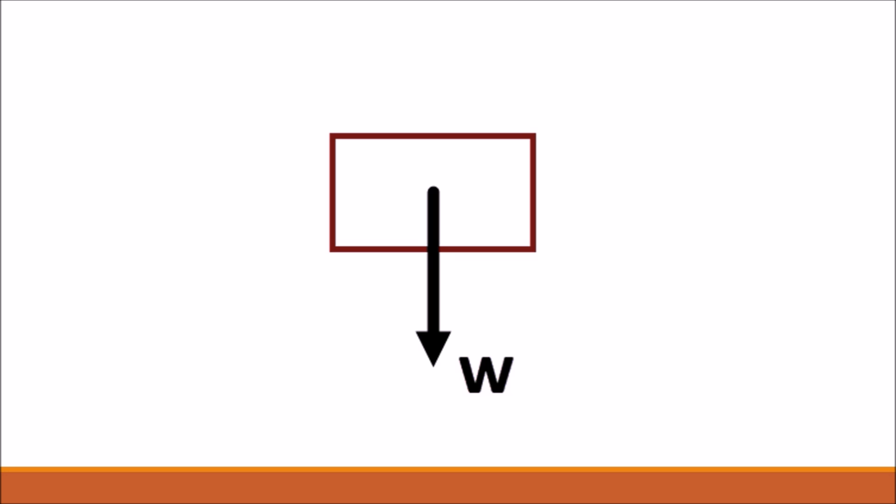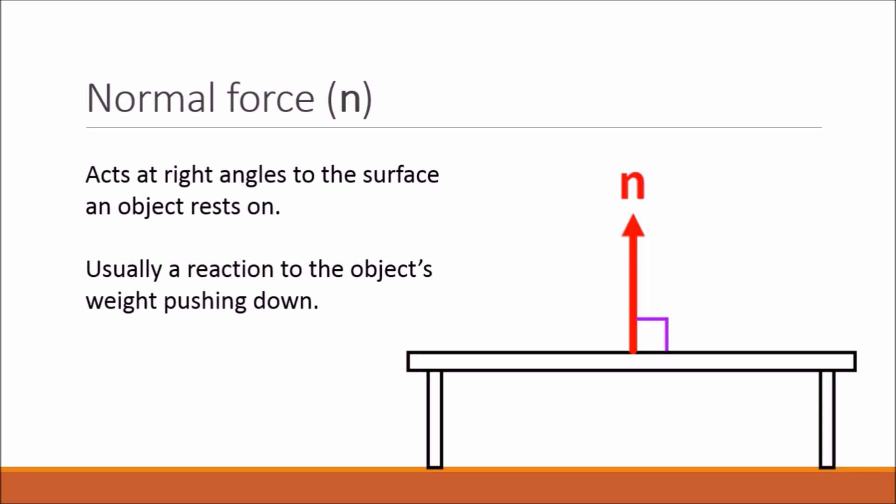Anything with mass will have a weight force in Earth's gravitational field. Weight is always drawn as an arrow pointing down, a vector. The tissue box is not falling, so there must be another force keeping it up. Indeed, the desk applies an upward force called the normal force. This is basically a reaction to the weight pushing down.